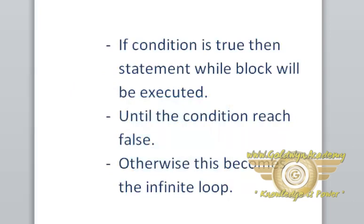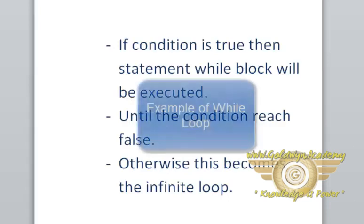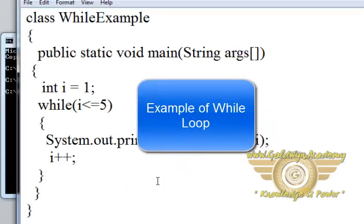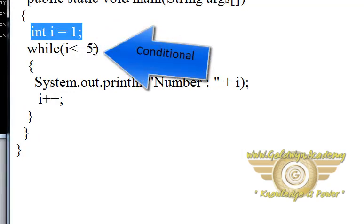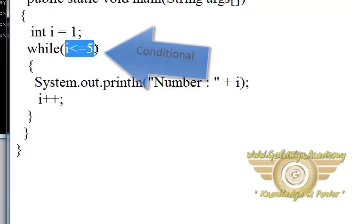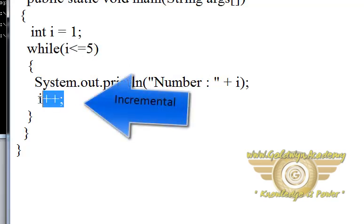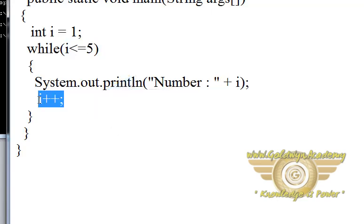To clarify your idea about while loop, let's go through the example. This is the example of while loop. Here, this is the initialization process — value 1 is assigned to integer variable i. This is the while keyword and here it is the condition. It means this loop will be stopped when the i value reaches 5. This is the incremental process; it increments i by 1 in each loop.